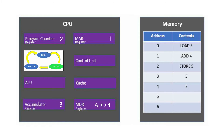The control unit decodes the instruction by comparing it to the instruction set it has stored. The instruction is: add the contents of memory location 4 to the contents of the accumulator. The control unit now executes the instruction and using the ALU adds the contents of memory location 4, which is the number 2, to the contents of the accumulator, which is number 3. The accumulator now reads 5.